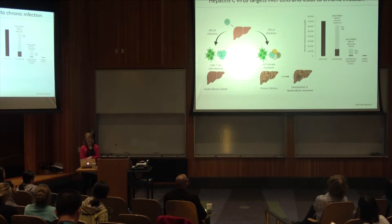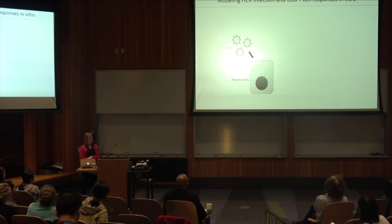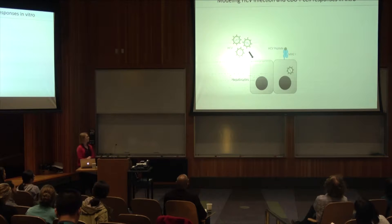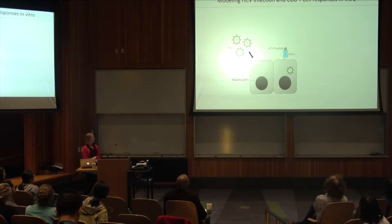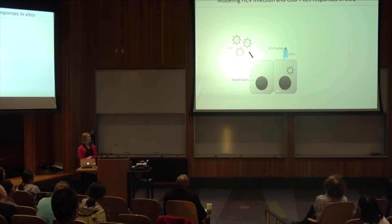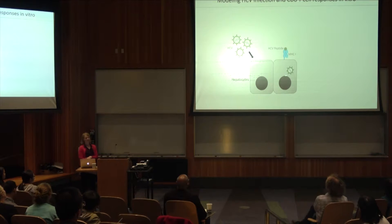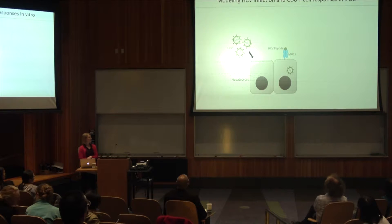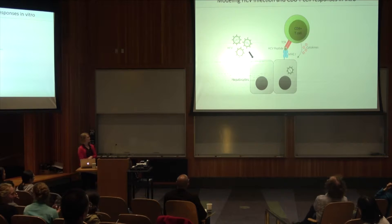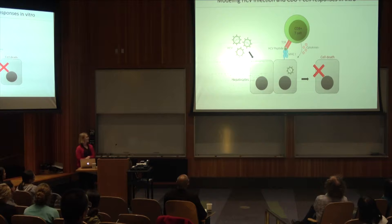So to do this, we had to establish multiple parts. First, we need a model of HCV infection into hepatocytes, the liver cells. Then a brief reminder about how CD8 T cells work, because we need to model that as well. So when you have HCV infection or any viral infection into a cell, the virus begins to make proteins. The proteins are then chopped up by cellular machinery, loaded onto MHC class 1 molecules, where they're then able to be recognized by a CD8 T cell, which then responds and leads to cell death.